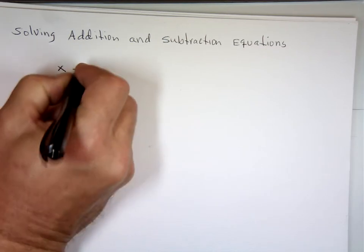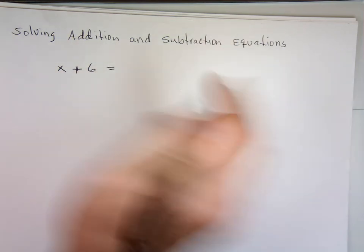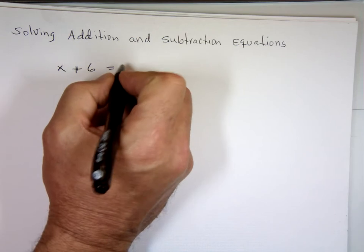If I have x plus 6, so all these equations are going to involve addition and subtraction in them. That's it. No multiplication, no division.